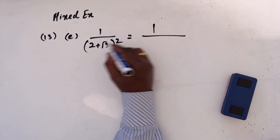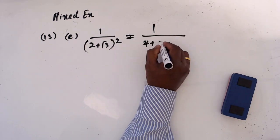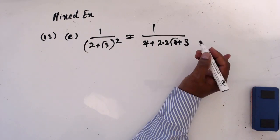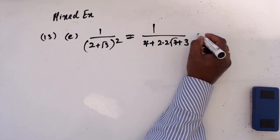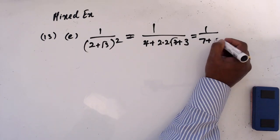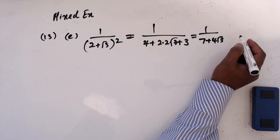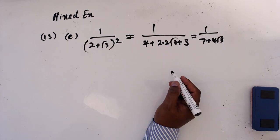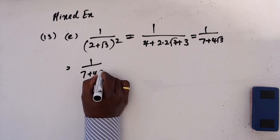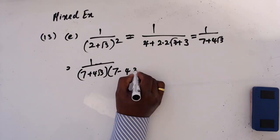Part A: let's square the expression. 2² is 4, then 2 times 2 times √3 times 3 gives the cross term. So 1 over (4 + 3) which is 7, plus 4√3. Then 1 + 7 + 4√3. Now let's rationalize by multiplying by (7 - 4√3).